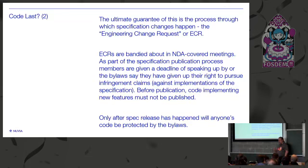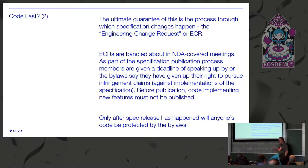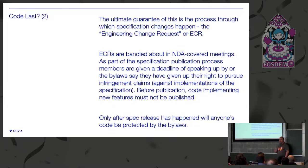These ECRs are discussed in NDA-covered meetings. As part of the specification publication process, members are then given a deadline of speaking up or implicitly giving up any opportunity to claim infringement on any of their patents in the future. As a result of this, the guidelines have always been that before publication, code implementing new features cannot under any circumstances be published. As someone who was working on the 64-bit ARM side to try to get things out on time, this can be more than slightly frustrating. The key point is that really only after the specification has been released is anyone actually protected from the patent.